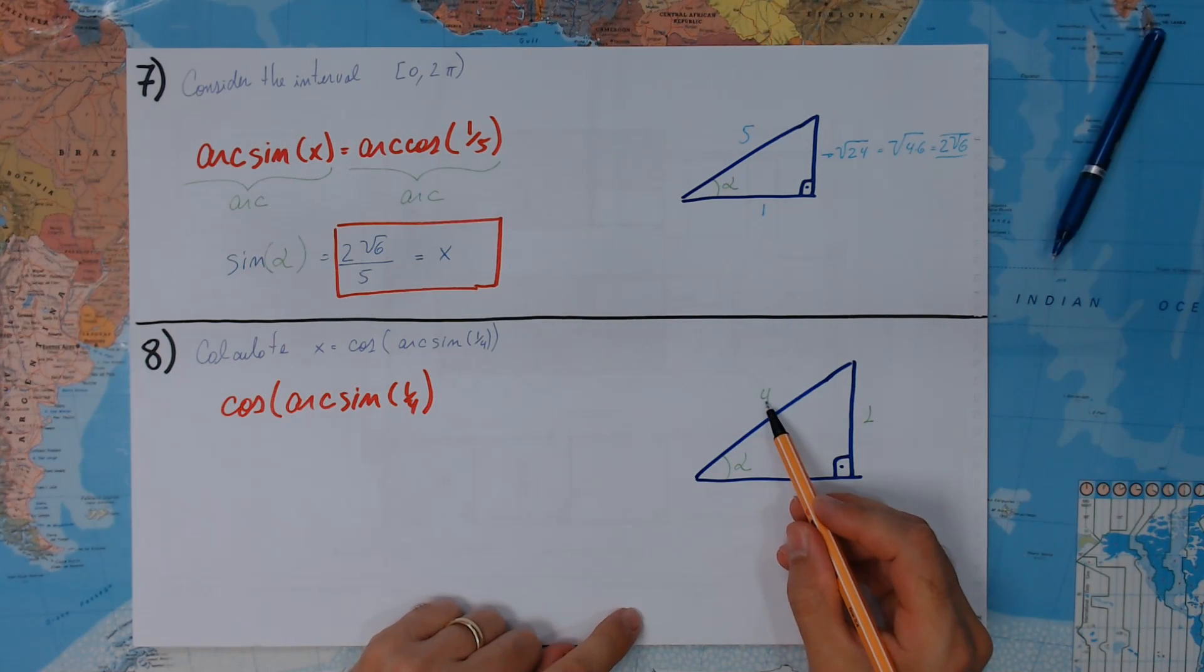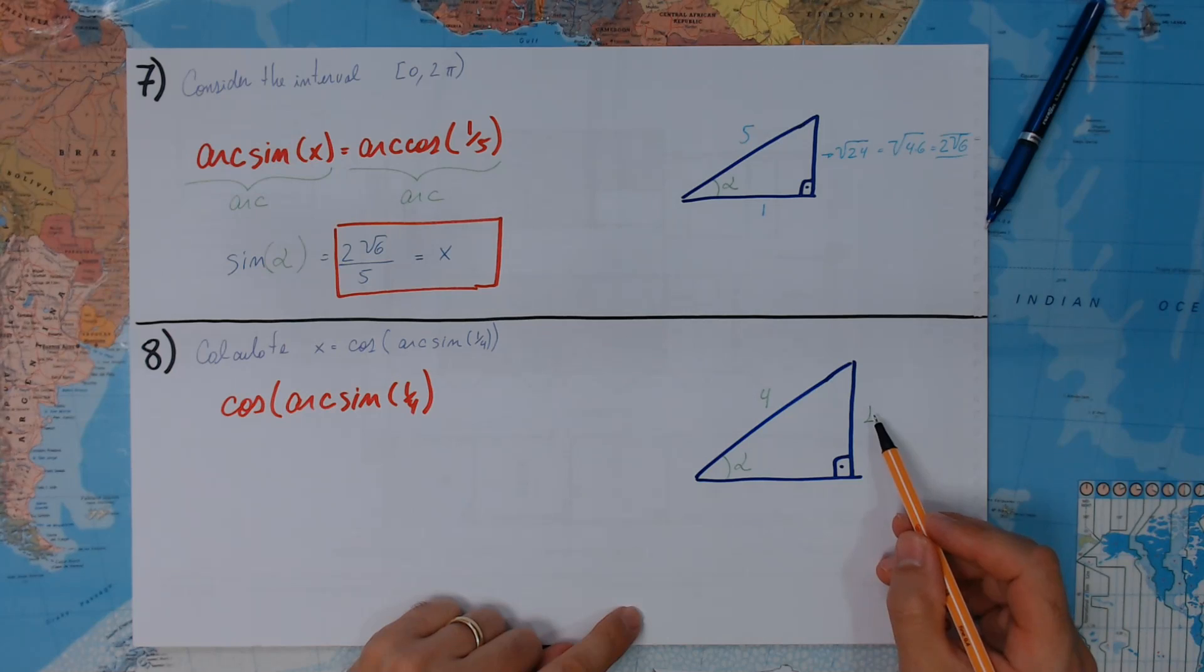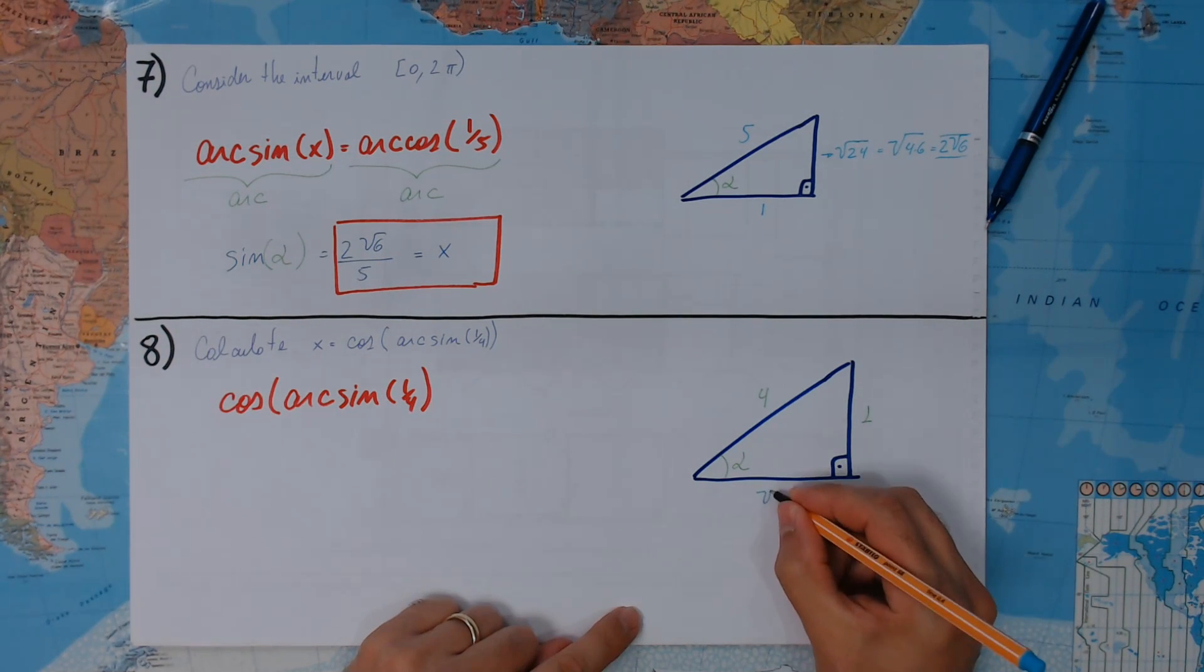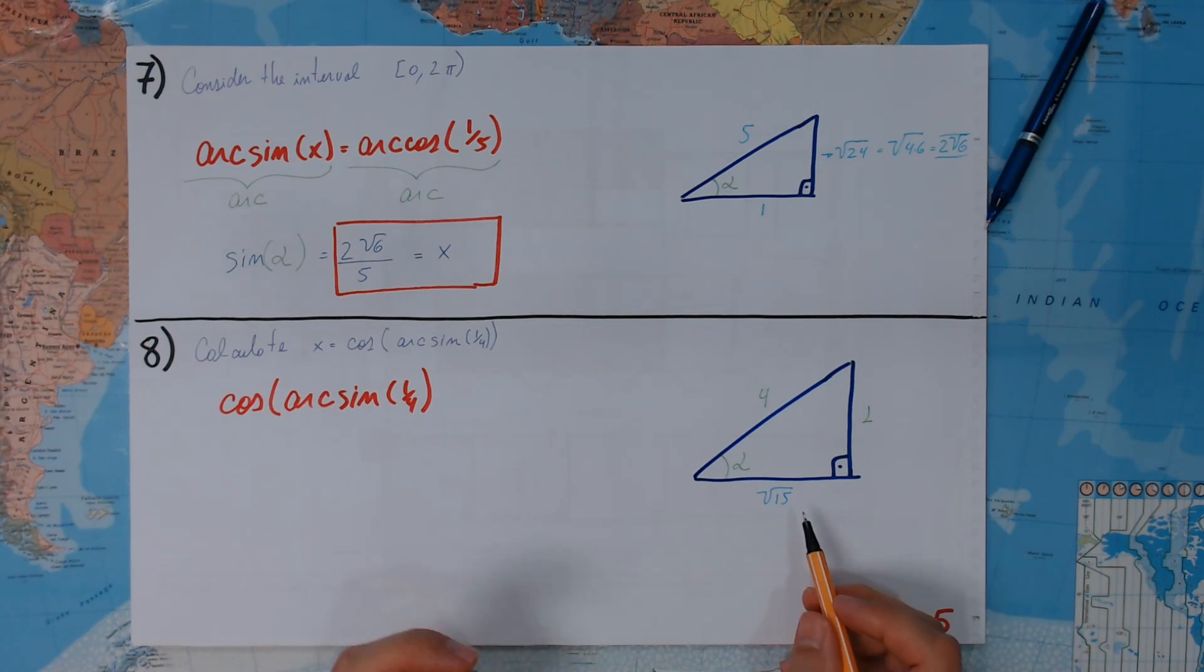Okay, this is 16. This is 1. Therefore, this is going to be 15, right? So, the square root of 15. 15 is just the factors 3 times 5. We can't put anything out of the square root, so let's just leave it like this.